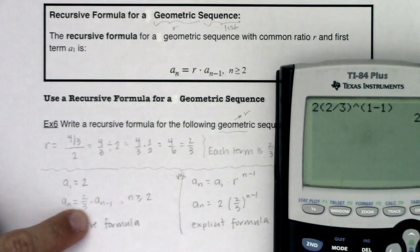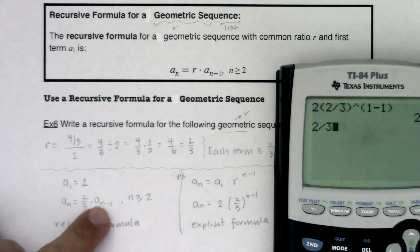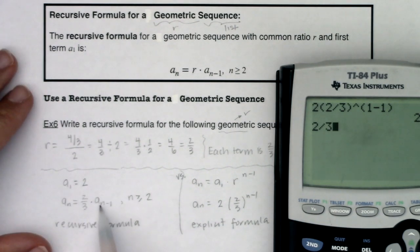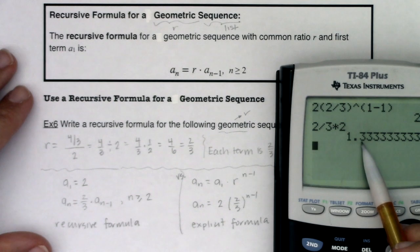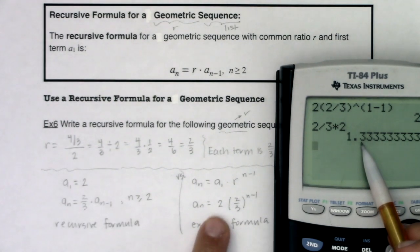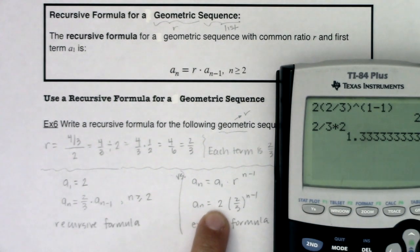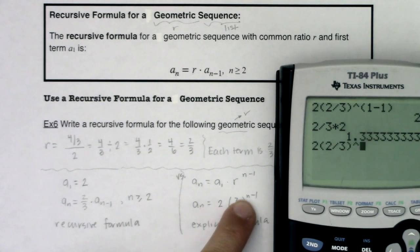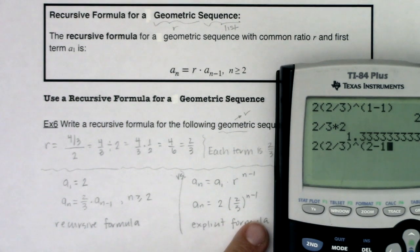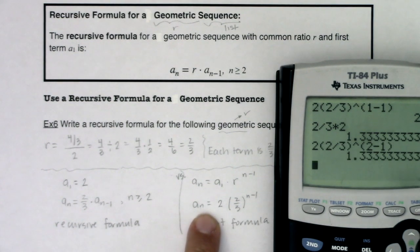Let's find a sub 2. a sub 2, according to this recursive formula, is 2 thirds times, well, if n is 2, 2 minus 1 is 1. So this is a sub 1, which we know to be 2. So I'm going to get 1.33 with the recursive formula. Let's try this. a sub 2 will be 2 times 2 thirds raised to the 2 minus 1. And I still get the same number.